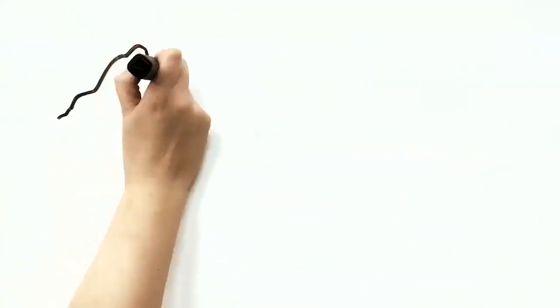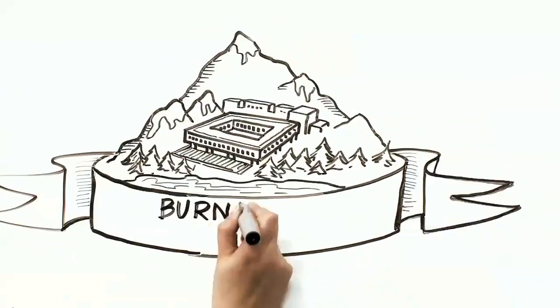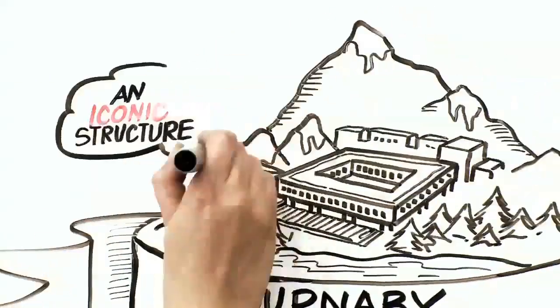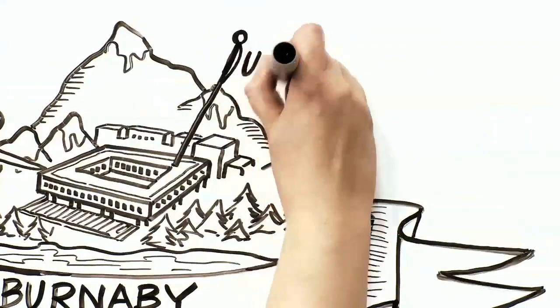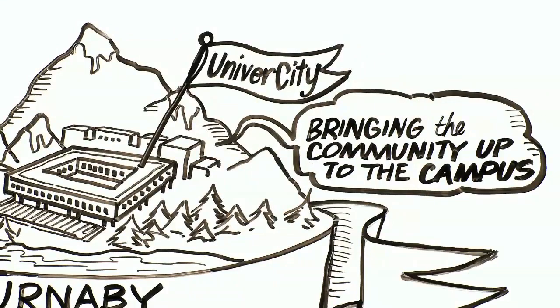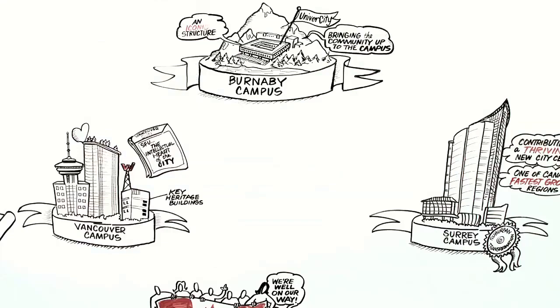Our original campus atop Burnaby Mountain is an iconic structure built almost 50 years ago. But it was physically isolated. Given we couldn't take the campus down to the community, we decided in the 1990s to bring the community up to the campus by creating UniverCity, a model sustainable community that continues to win awards for development and design.